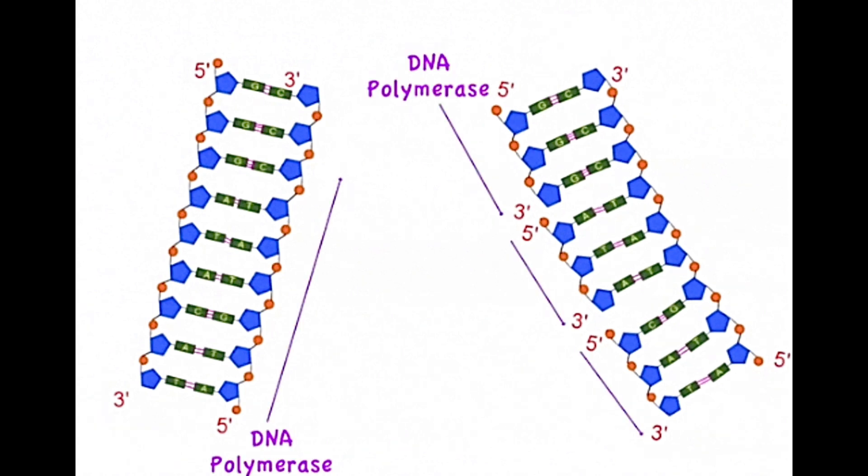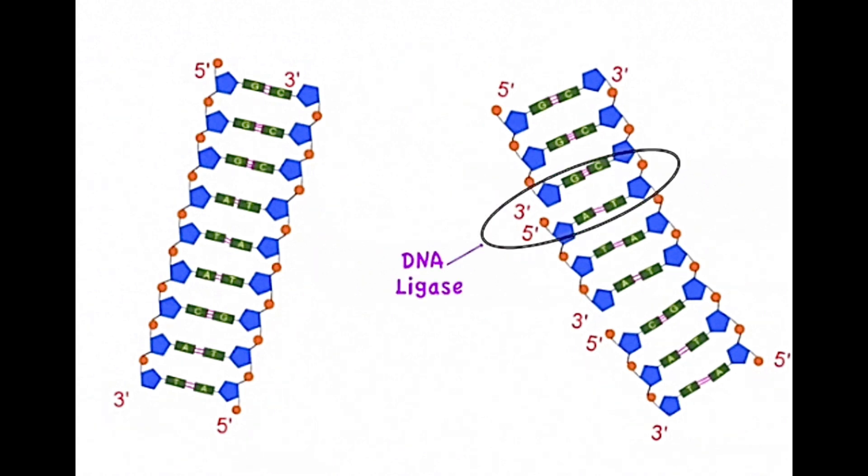In contrast, on the lagging strand the DNA polymerase and helicase work in opposite directions and this leads to the creation of Okazaki fragments which must be joined by DNA ligase.